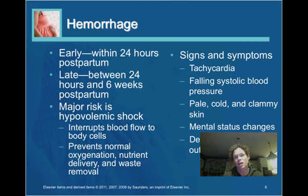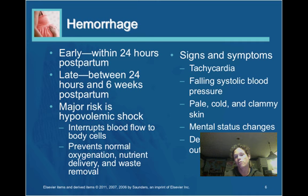According to the book, postpartum hemorrhage occurs in about 4% of all deliveries. It can be defined as early — occurring within 24 hours postpartum — or late, which is anywhere from 24 hours to 6 weeks postpartum. During pregnancy, the woman's blood volume increases significantly, between 500 and 1,000 mLs, so that if she has any bleeding after birth, she is able to compensate because she has extra volume.